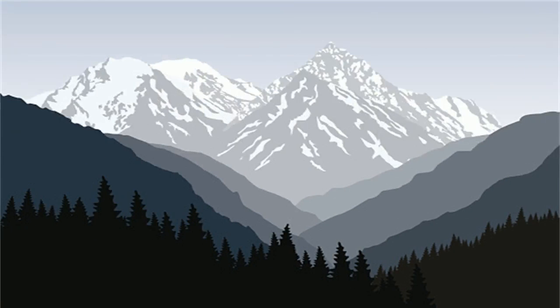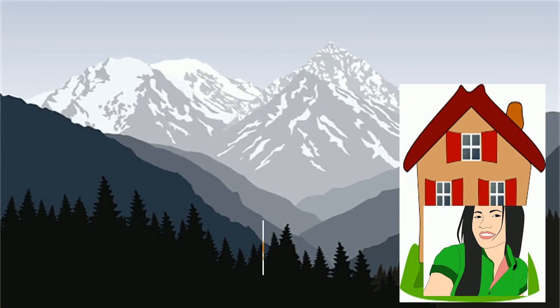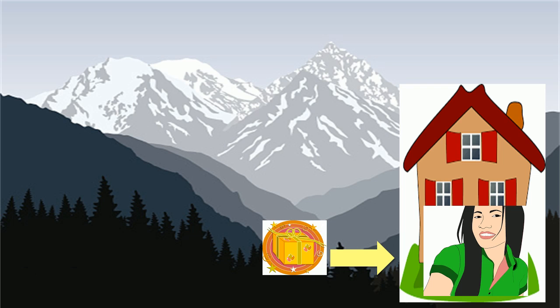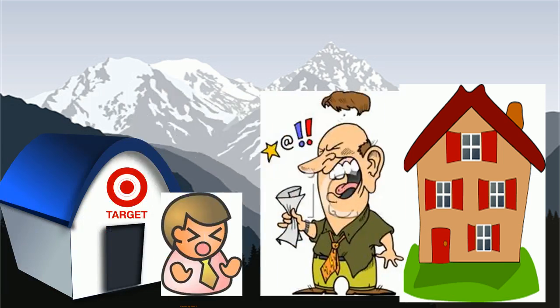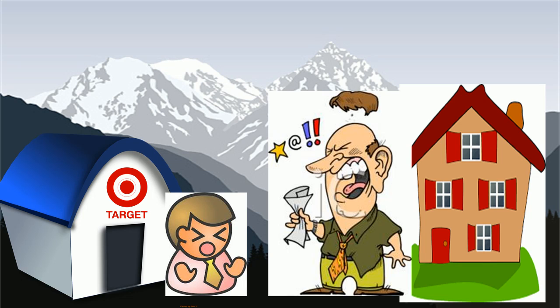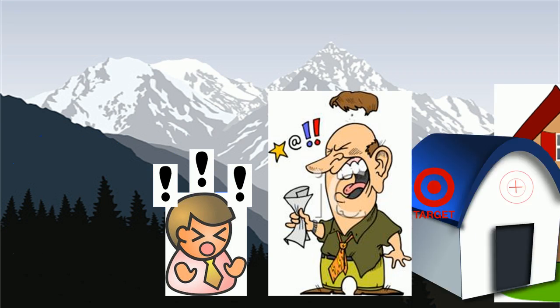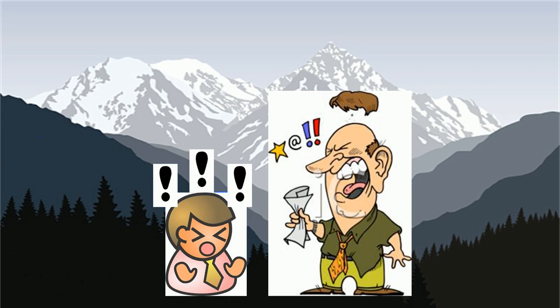One day, this girl got a gift bag delivered to her address from the Target supermarket, after which her father got angry as she was not married yet. The thing that makes us wonder is how could the Target supermarket come to know about the teen's situation before her father knew?